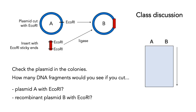Here's another class discussion. We've got a plasmid cut with EcoRI, and an EcoRI-cut gene ligated into it — going from plasmid A, which contains no inserted gene, to plasmid B, which contains an inserted gene. You then decide to check the plasmid in the colonies. How many DNA fragments would you see if you cut plasmid A with EcoRI, and the recombinant plasmid B also with EcoRI? Consider where the bands would appear on the agarose gel shown on the right. Stop the video, think about the banding patterns, and then restart.